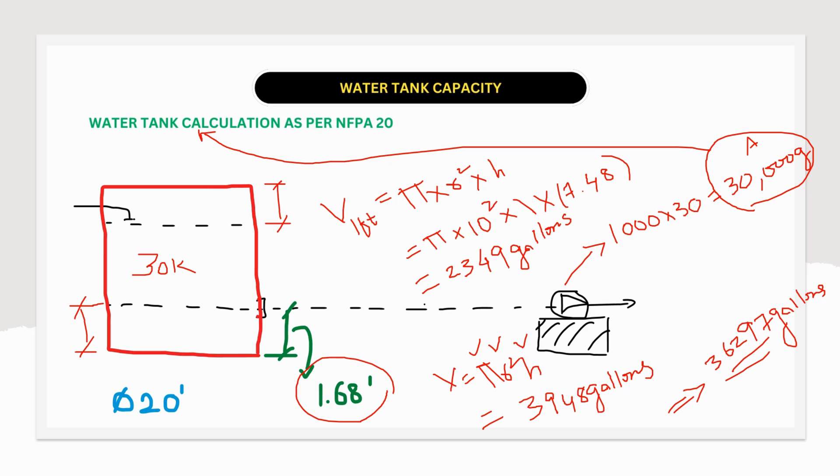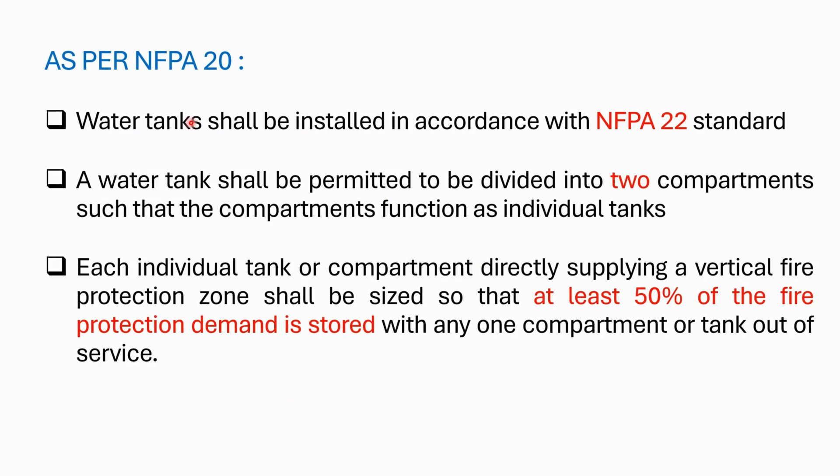In the market, I don't think 36,297 gallons water tank would be available. So we will consider 40,000 gallons water tank based on the standard tank size. We need to keep three most important points related to the water tanks as per NFPA 20. Water tanks shall be installed in accordance with NFPA 22 standards, and the water tanks shall be permitted to be divided into two compartments such that the compartments function as individual tanks.